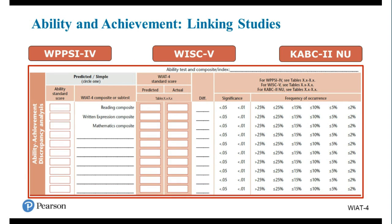If you're making eligibility decisions using ability-achievement discrepancy analysis, we are providing information in the technical manual connecting the WIAT-4 with several different measures of ability: the WPPSI-4, the WISC-V, and the KABC-2-NU. You'll look at the ability standard score — for example, full-scale IQ — use that to predict achievement scores on the WIAT, then calculate the difference between the predicted and the actual score, determining whether those differences are significant and whether they are unusual based on the base rate or frequency of occurrence.